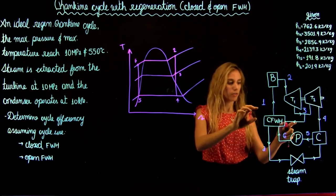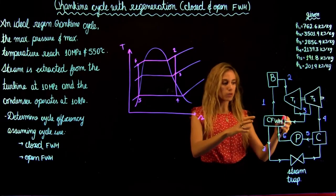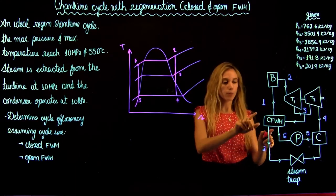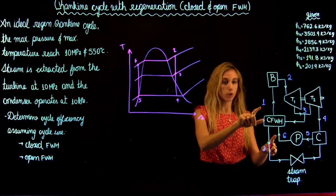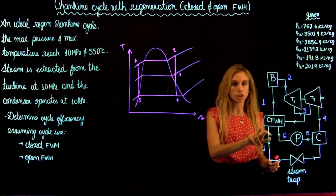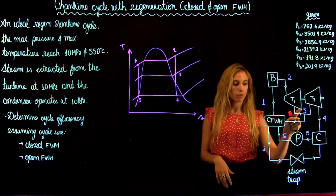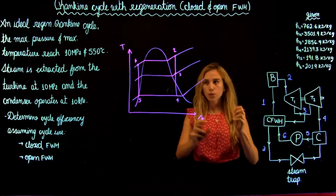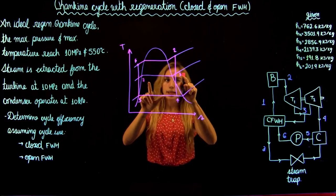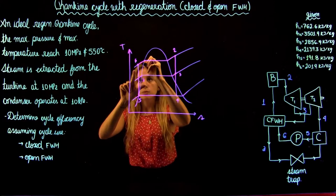The flow from three to A is going through the shell. We are doing this because we want to use the energy from three to A to heat up the flow from six to one without mixing. We also have to remember that there's no pressure change in the closed feedwater heater, so we're always staying in the same pressure line. So from three to A, we're going to go back — that's going to be state A in the same pressure line as three — and the energy from three to A is used to heat up the flow from six to one.